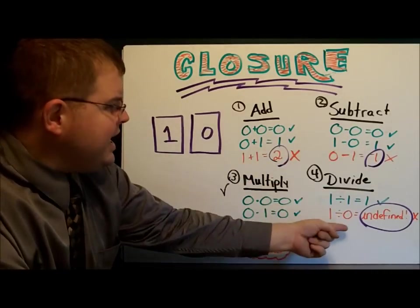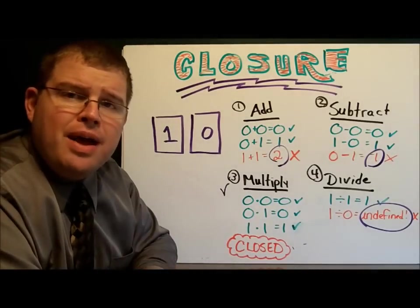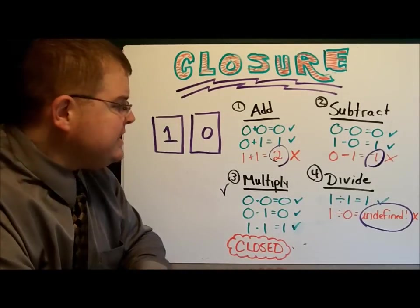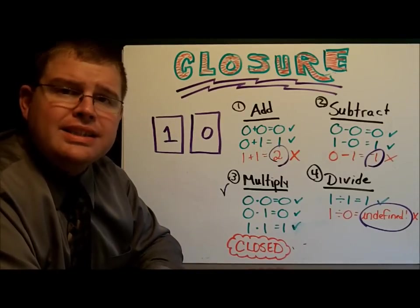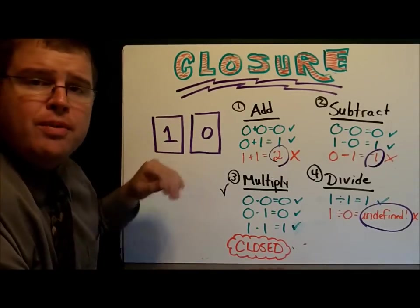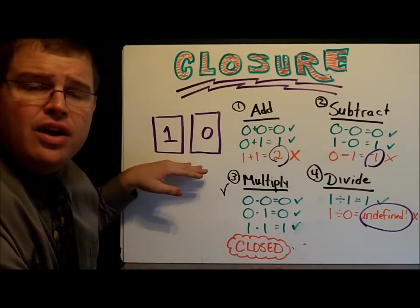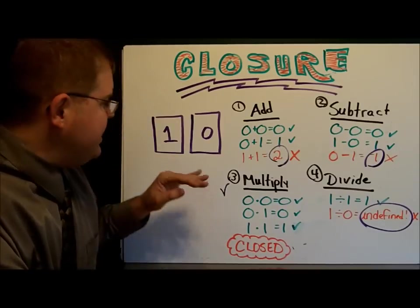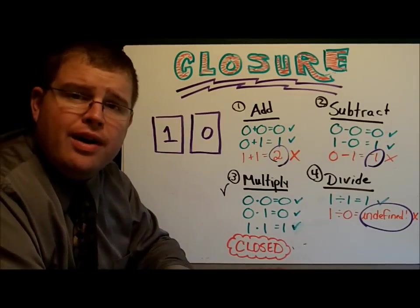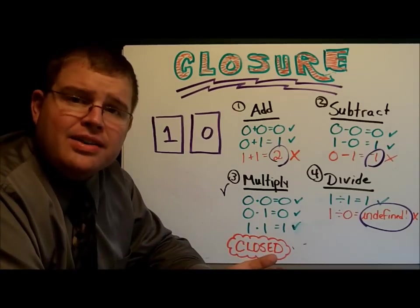You won three times. I won once. When you find the example that makes it not work, we say that the set is not closed, meaning that the answer is somewhere outside of our group of numbers. When the answer is in here, always, we say that it's closed. In other words, our answer never came from somewhere else. Now, isn't this a great game? I thought you'd like it.